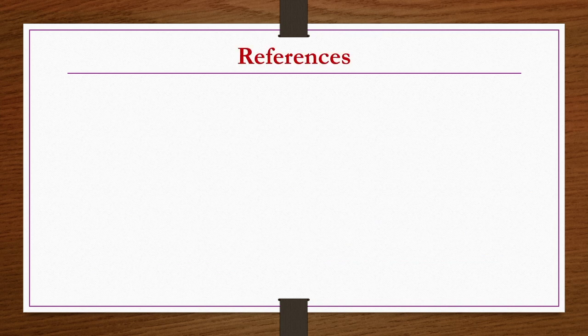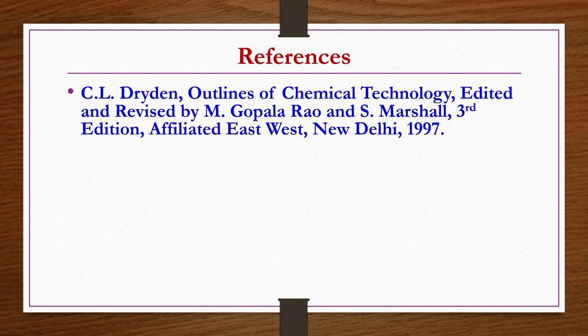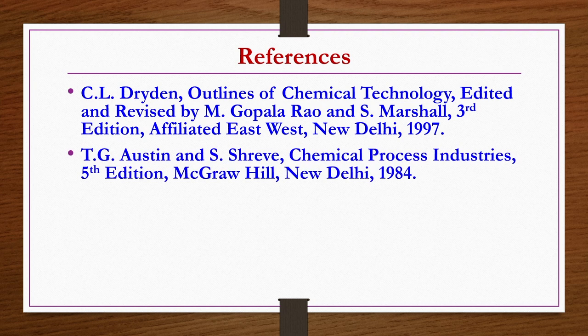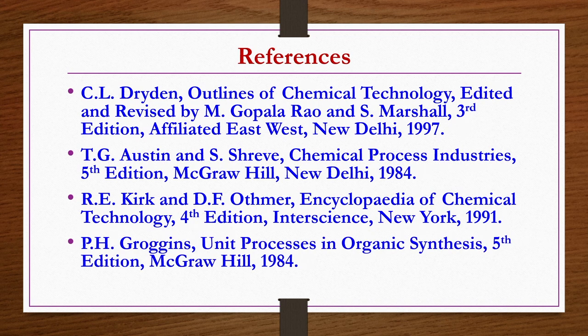References for today's lecture: Outlines of Chemical Technology by Dryden, edited by Gopal Rao and Marshall, 3rd edition; Chemical Process Industries by Austin and Shreve, 5th edition; Encyclopedia of Chemical Technology by Kirk and Othmer, 4th edition; Unit Processes in Organic Synthesis by Groggins, 5th edition. Thank you.